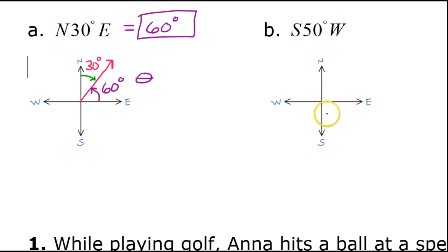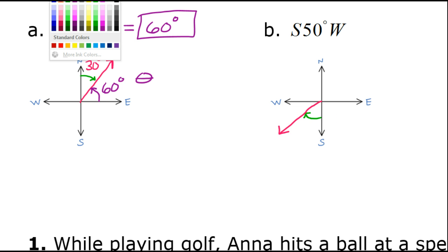Now look at problem B. Let's do the same thing. South 50 degrees west. The south means start by facing south, then turn 50 degrees towards the west. So if we start by facing south and then we begin to turn 50 degrees towards the west, like this, then our vector is going to end up in this position, where this angle is 50 degrees.